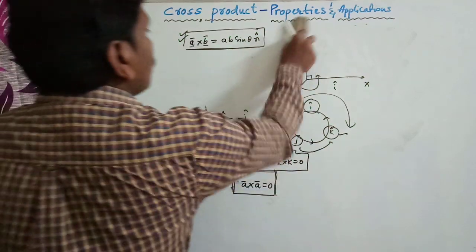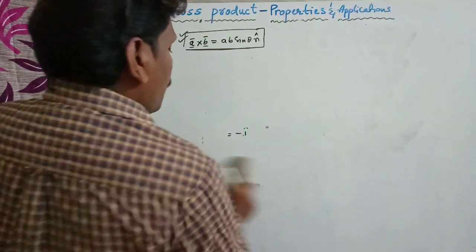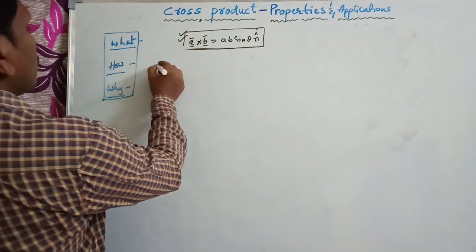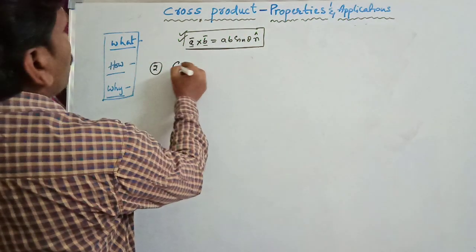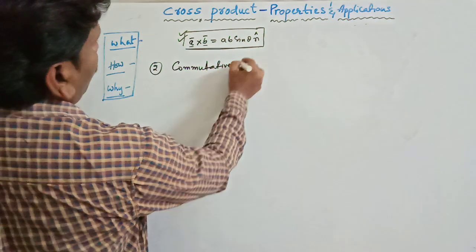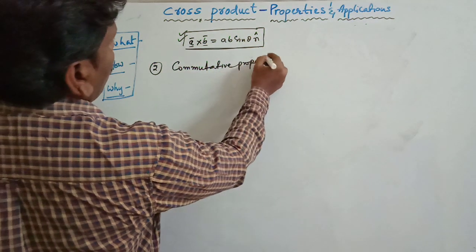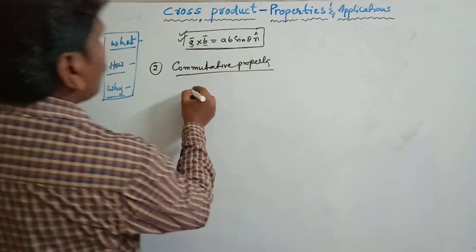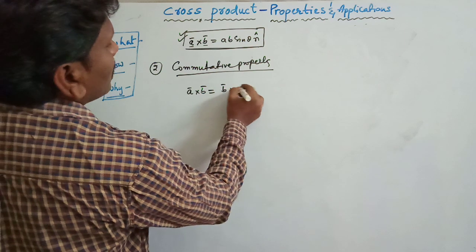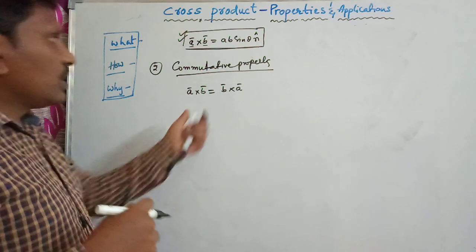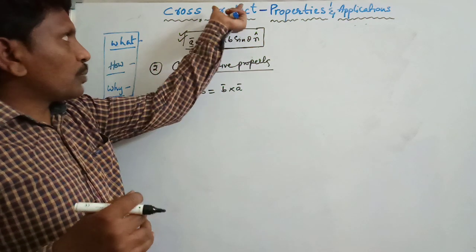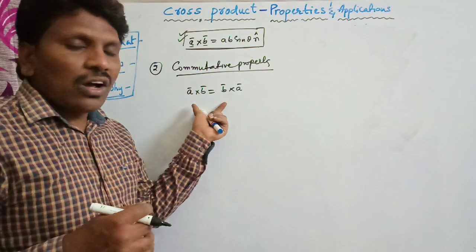This is the property of orthogonal unit vectors. Now let us understand the second property: the commutative property. We need to check whether the cross product obeys the commutative law — that is, whether A bar cross B bar equals B bar cross A bar.